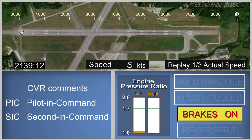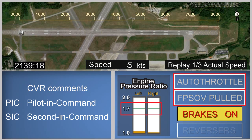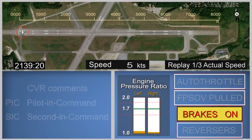Based on a review of previous takeoff attempts, the flight crew likely targeted an engine pressure ratio setting, or EPR, of 1.7, which is shown with a green horizontal bar. In addition, there are indications for activation of the autothrottle, flight power shutoff valve handle, or FPSOV, brakes, and thrust reversers. The animation is first shown at one-third speed and then plays again at actual speed.